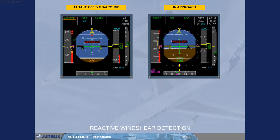The reactive wind shear warning is provided by the FE. The FG provides the following protections against wind shear: at take-off and go-around, with the autopilot flight director Speed Reference System vertical mode, which commands a pitch ensuring a minimum positive rate of climb despite a potential speed drop. In approach, with the ground speed mini function, the managed speed target in approach is automatically adjusted with wind variations, so as to ensure that the aircraft ground speed does not drop below a minimum value.